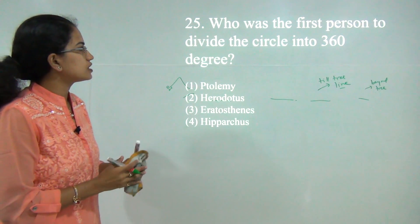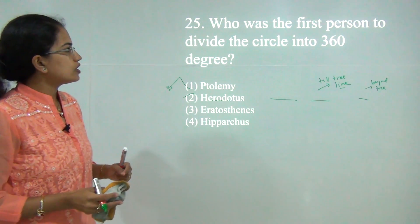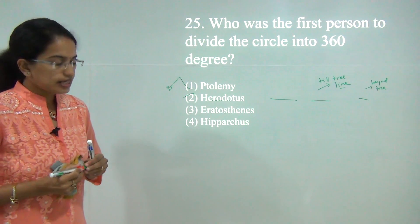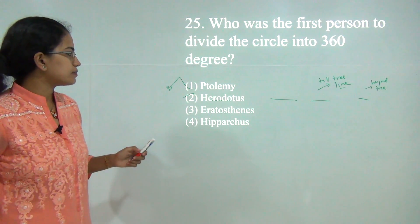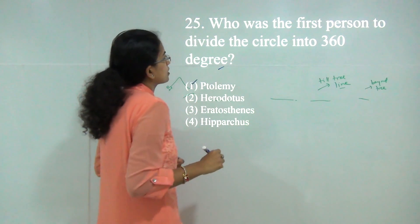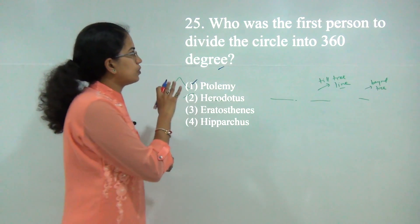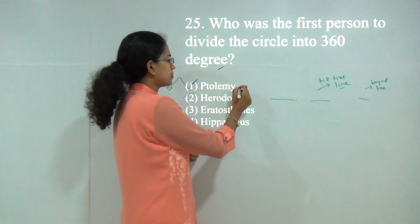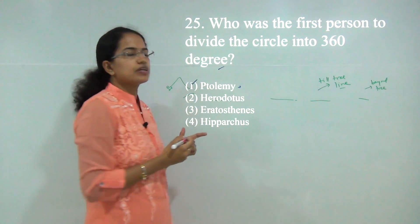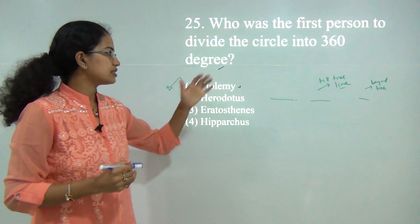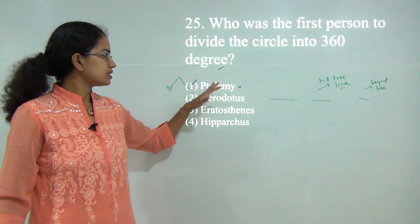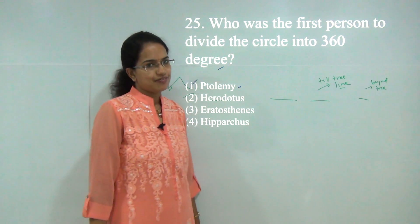Finally, the last question: who was the first person to divide the circle into 360 degrees? The correct answer is Ptolemy — Ptolemy divided the circle into 360 degrees. He also wrote a book known as Almagest, and we will discuss that in the next questions we cover. With this, we will be covering the remaining questions in the next set. Have a good day.